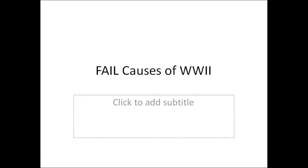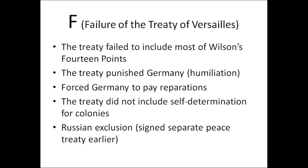An acronym to remember the causes of World War Two is FAIL. F is for the failure of the Treaty of Versailles: the treaty failed to include most of Wilson's 14 Points, which could have allowed for stronger democratic countries to check Germany's growing power. The treaty punished and humiliated Germany, making them want revenge. It also forced Germany to pay huge reparations — made worse by the Great Depression. The treaty did not include self-determination for colonies, and Russia was excluded because they had signed a separate peace, leaving them bitter — which likely contributed to Stalin signing the non-aggression pact with Hitler.